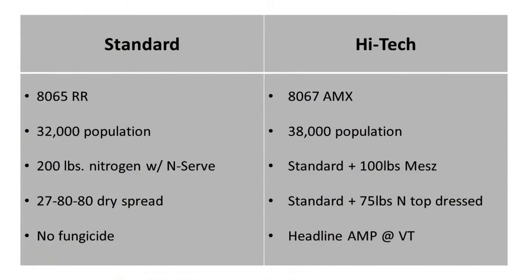In the standard trial, we have a 110-day Roundup Ready Hogemeyer hybrid AD65, planted at a population of 32,000. We applied 200 pounds of spring ammonia with NSERV, a 27-80-80 fertility program, and made no applications of fungicide.